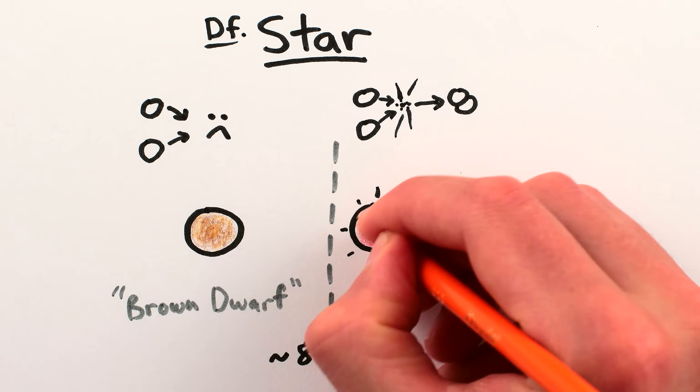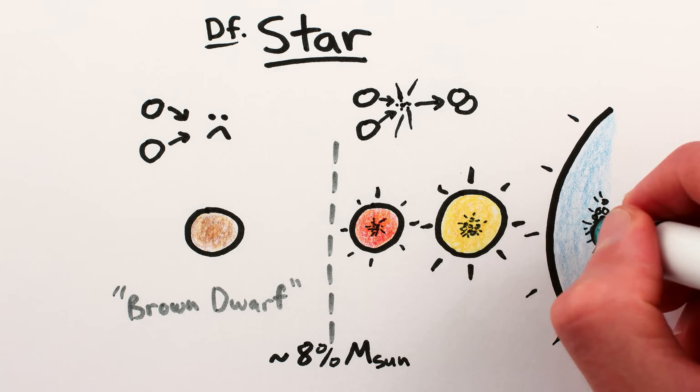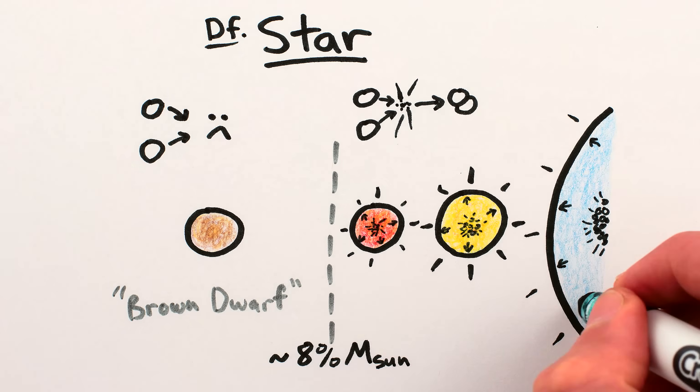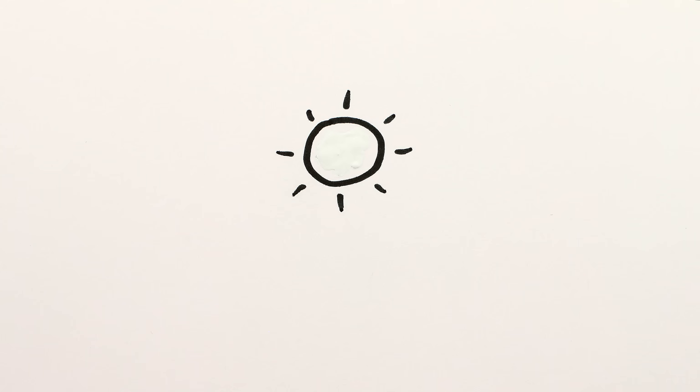Above this dividing line are stars like red dwarfs, our Sun, and so on, which use hydrogen and other fusion to keep themselves hot enough to stave off gravitational collapse. But eventually, stars run out of fuel for nuclear fusion and die.